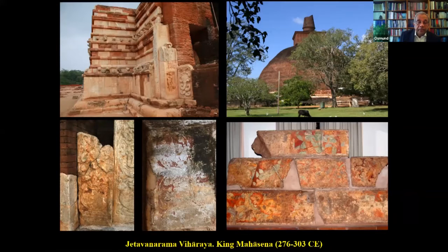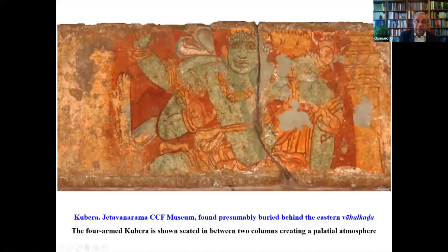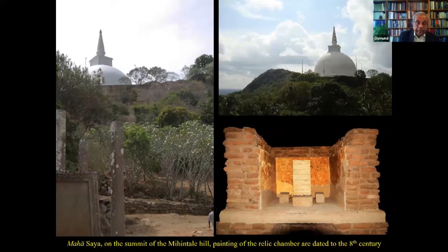The island has a long tradition of paintings. The Vahalkada or Ayaka frontispieces, facing four cardinal points, erected at the stupas, have relic chambers dating back from the 2nd century CE. These are among the earliest paintings we know of. While restoring what is supposed to be the largest stupa in the world, built in the 3rd century, archaeologists found paintings inside. You can see traces of polychrome on the facade, and here we have one of the oldest paintings of Kuvera. There is also a pond where you can see swans swimming in lotus flowers.